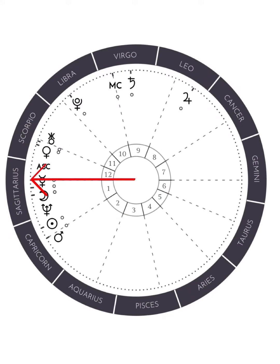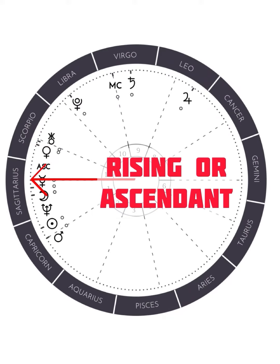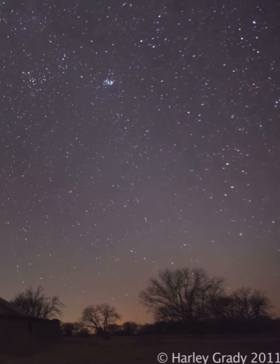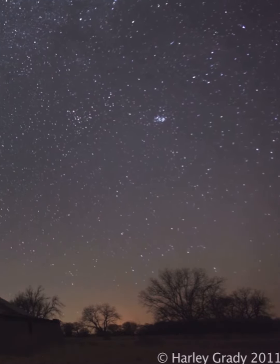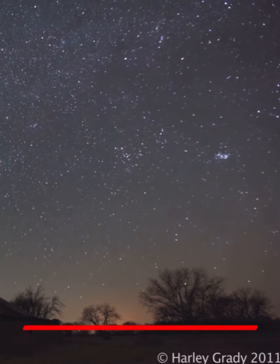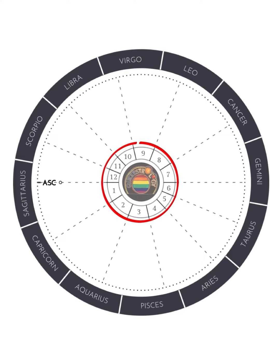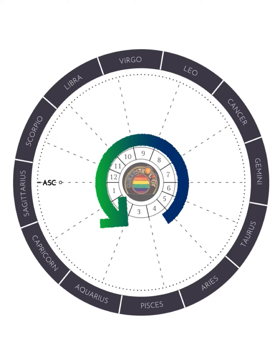The point of origin for your chart is your rising sign. It's labeled on the left side of this round chart as ASC, ascendant, rising. That is the point of origin because it was the constellation that was on the horizon at the time you were born. In the middle you'll see numbers 1 through 12.